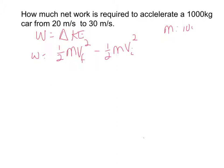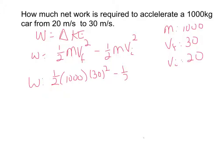My mass is 1000 kg, velocity final is 30 m/s, and velocity initial is 20 m/s. Substituting: W equals one-half times 1000 times 30 squared minus one-half times 1000 times 20 squared. That's 500 times 900 minus 500 times 400.